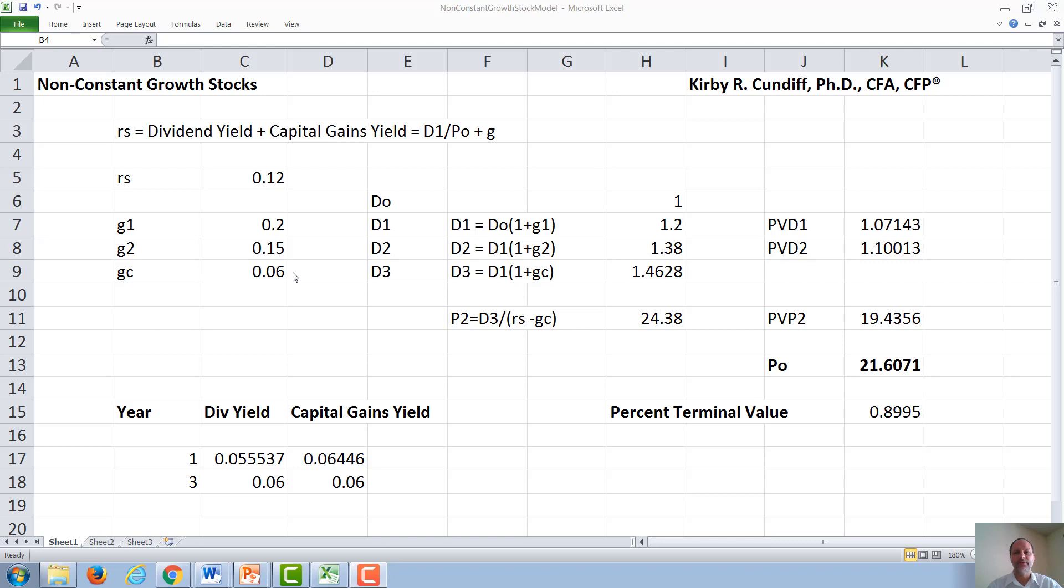To figure out the value of the stock at time P0 right after D0 was paid, we first need to figure out various dividends and then the terminal value of the stock. So if a dividend was just paid D0 of $1, and we want to know the value of the stock right after that dividend was paid,